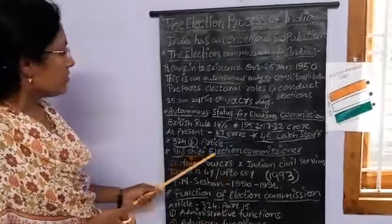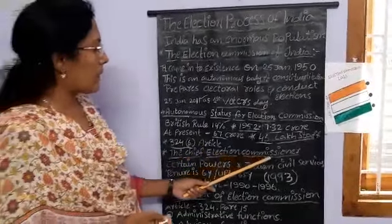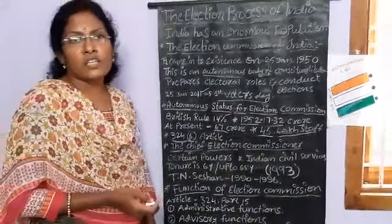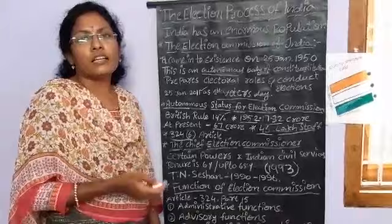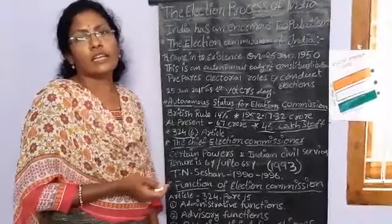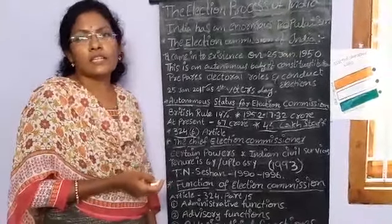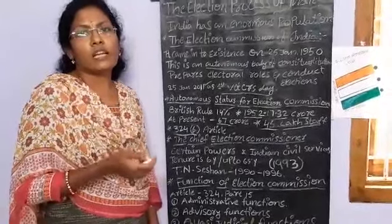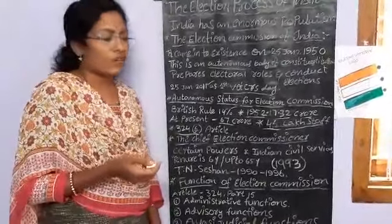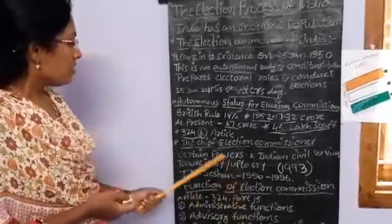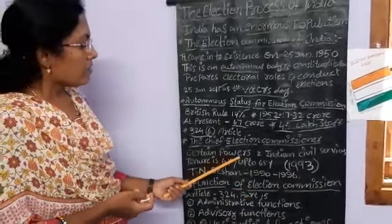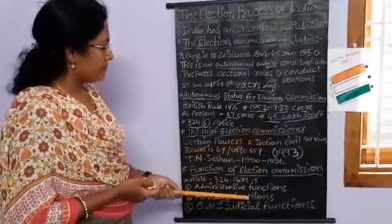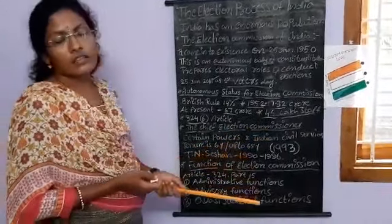Now we discuss the Chief Election Commissioner. The Chief Election Commissioner is the head of the Election Commission of India. The present Chief Election Commissioner is Suni Araura. The Constitution gives specific purpose to the direction of the Chief Election Commissioner — to conduct elections at the center and state level in a fair and smooth manner.